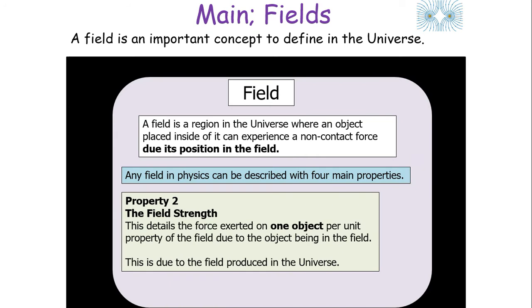As we've mentioned before, a field is an important concept to define in the universe. A field is a region in the universe where an object placed inside of it can experience a non-contact force due to its position in the field. There are four main properties any field can be described with.